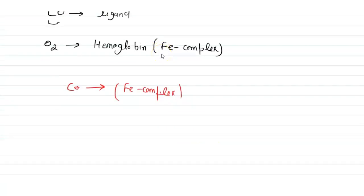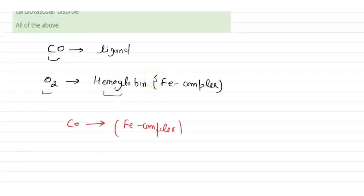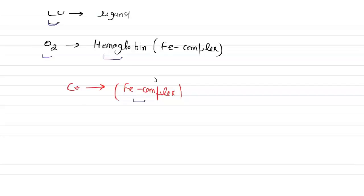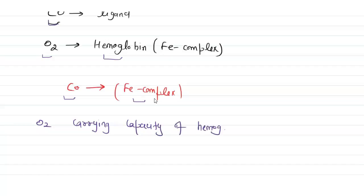Because of this stable complex, the oxygen carrying capacity of hemoglobin decreases rapidly. Initially, hemoglobin transports oxygen to different parts of the body, but when carbon monoxide is present, it forms a stable complex with hemoglobin, and the O2 carrying capacity of hemoglobin decreases.